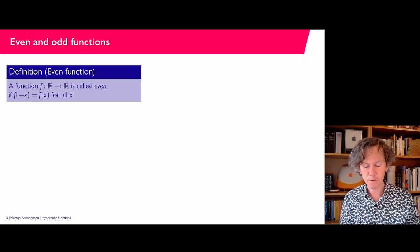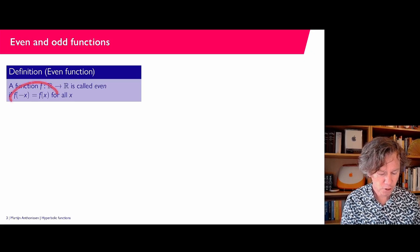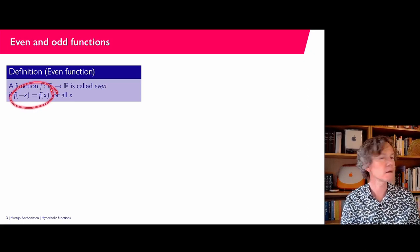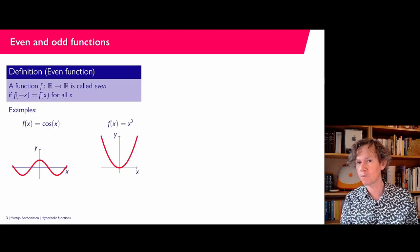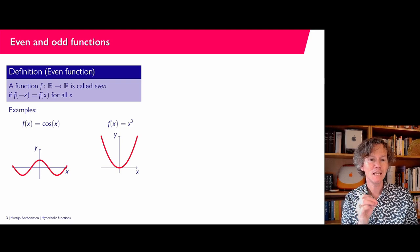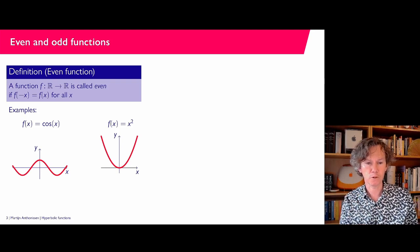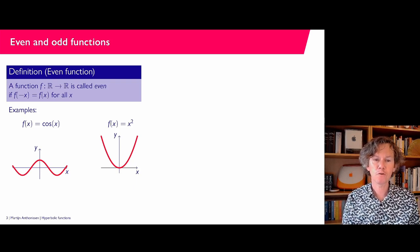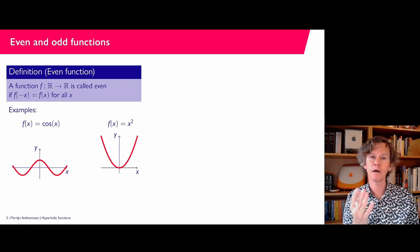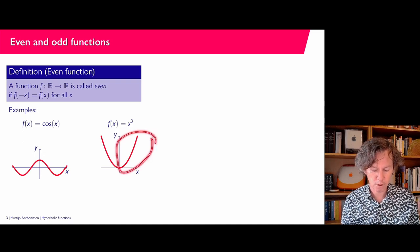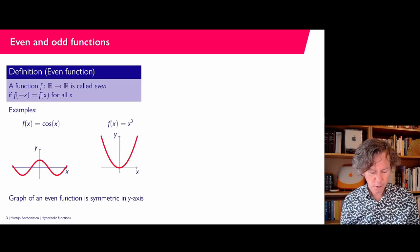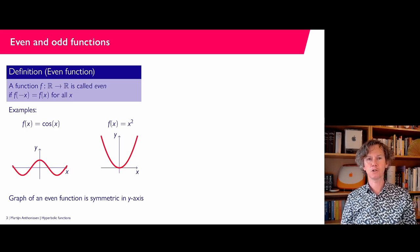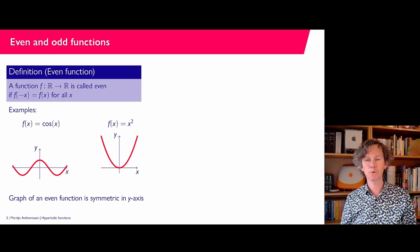A function is called even if f of minus x equals f of x. So if you plug in a negative x value, you find the same value as for positive x. Examples are cosine, x squared, x to the power of 4, x to the power of 6 — every even power of x has this property. The graph of an even function is symmetric in the y-axis: if you mirror one side in the vertical axis, you get the graph on the other side.